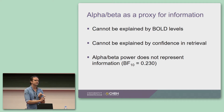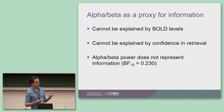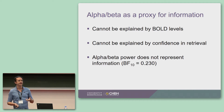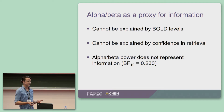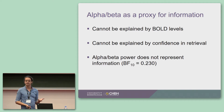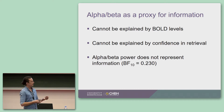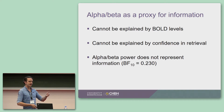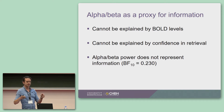Also worth noting: it's not pre-stimulus power driving this. There's some nice work on signal detection theory and baseline excitability suggesting that changes in pre-stimulus alpha-beta power might predict how much information you're representing in the cortex. But we don't find that effect in pre-stimulus alpha — it seems to be particularly the post-stimulus alpha, after that video comes on screen.